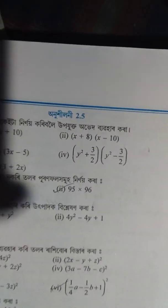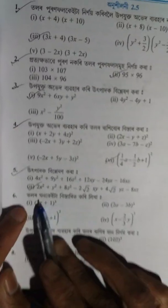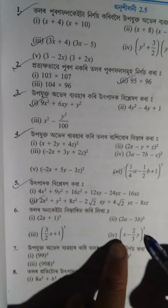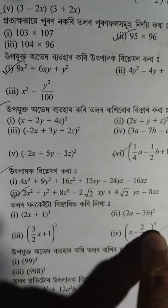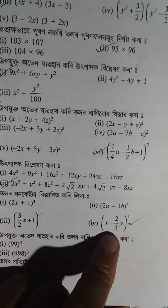Exercise 2.5, problem 6, part 12, 20, 1, this is the sign number. X minus 2 by 3 Y whole cube. Now let's start.